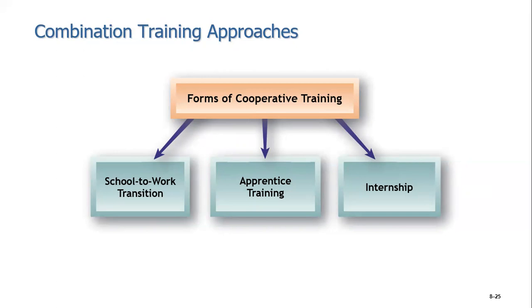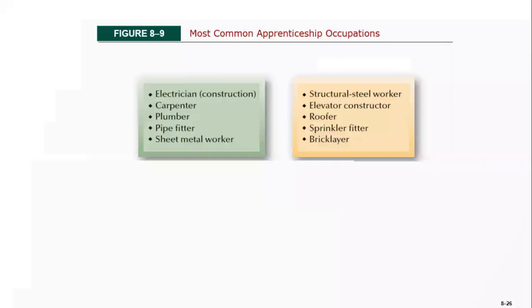Apprenticeship programs are generally six-month training programs where employees come from different schools and universities to train. Internships are common for engineers, MBA, and BBA students who go to corporate sectors to develop their skills. They get to know how things actually work in organizations — whether what they studied in books really exists in the real world.